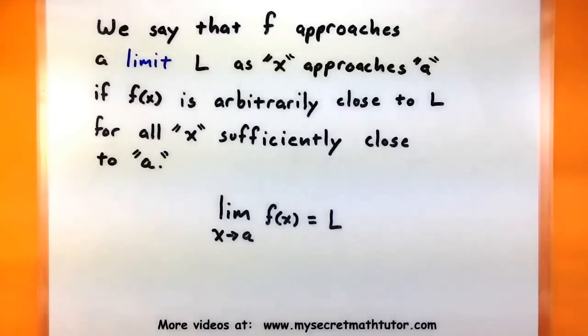We say that f approaches the limit L as x approaches A if f is arbitrarily close to L for all x sufficiently close to A. Now if we're looking at that definition and still saying, I have no idea what it is, let's pick it apart and see if we can understand it a bit better.